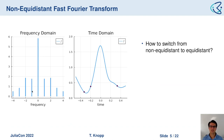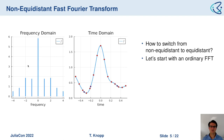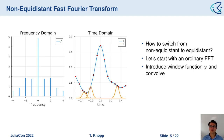On the left-hand side you can see an equidistantly sampled frequency-space signal, and on the right-hand side non-equidistant sampling points. The question is how to go from one to the other. First, we apply an FFT to the left-hand side and end up at the red dots. The question then is how to go from the red dots to the purple dots, and to do so we introduce a convolution with a small kernel function phi.